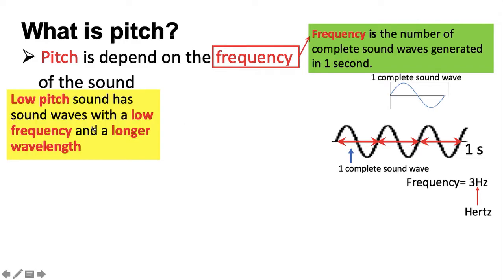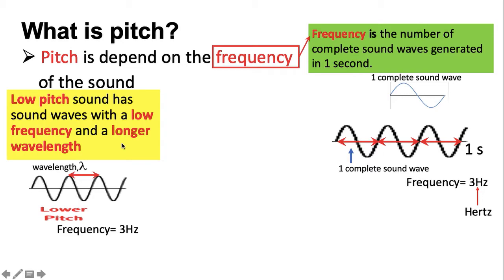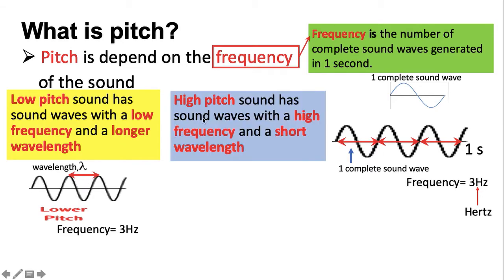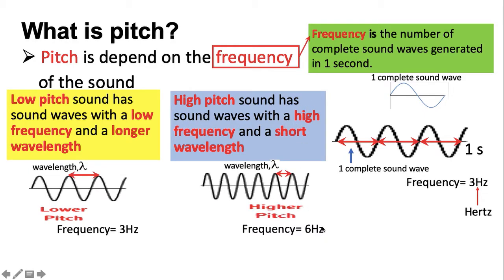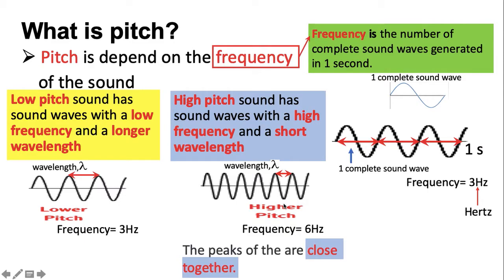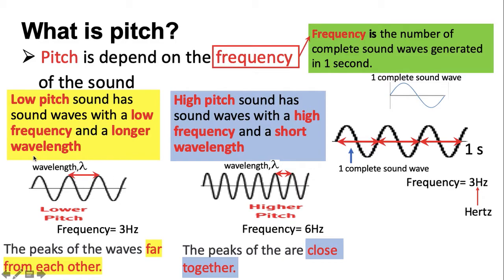A low pitch sound has a sound wave with a low frequency and a longer wavelength. In contrast, a high pitch sound has a sound wave with a high frequency and a short wavelength. If you observe the peaks of the wave in the sound wave graph are closer together, this means the sound has a high frequency and is a high pitch sound. But if the peaks of the wave are farther from each other, the sound is a low frequency and a low pitch sound.